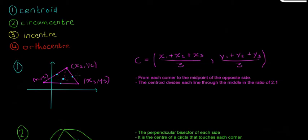Another thing you need to know about the centroid is it divides each line through the middle in the ratio of 2 to 1. So what that means here is this bit here, this line, this straight line in the middle, is divided up into the ratio of 2 to 1. That's just one of the pieces of information you need to know about the centroid.